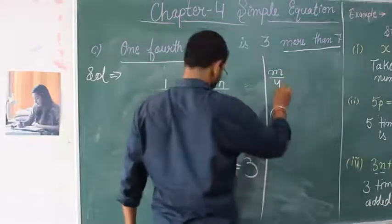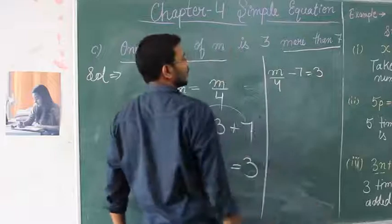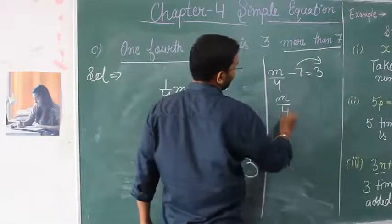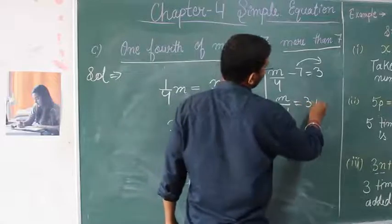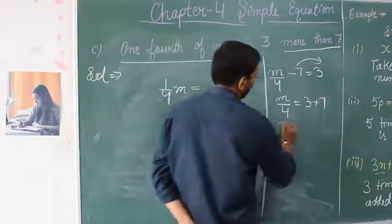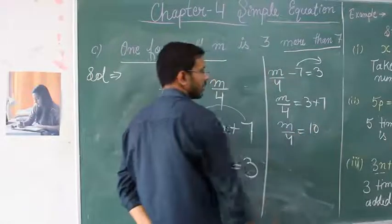m by 4 minus 7 equals 3. Now we transfer 7 to the right side. This gives m by 4 equals 3 plus 7. m by 4 equals 10.